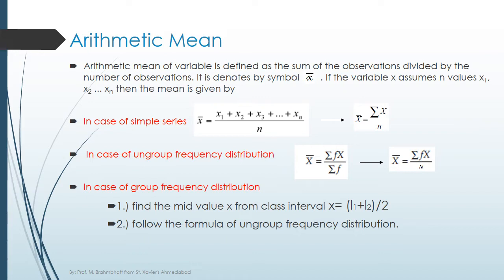And in the third category, which is grouped frequency distribution, there are two steps. The first step is to find the mid value of x from the given class interval. In this category of data, you can find the classes and their frequency.